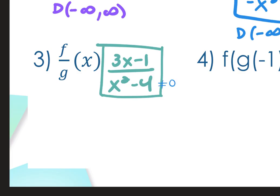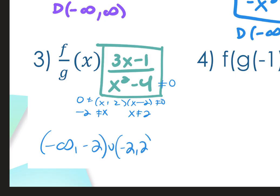This whole thing can't equal 0. So I can either add the 4 square root both sides, putting plus and minus, or I could have factored this, x plus 2, x minus 2, and set both of them not equal to 0, which means x cannot equal negative 2 and x cannot equal 2. So from negative infinity to negative 2, then negative 2 to 2, then 2 to positive infinity is the domain restriction on that one.